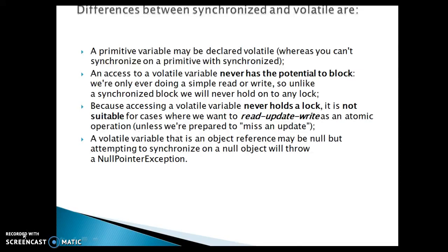When you declare a variable as volatile, there is no blocking mechanism and no lock involved. If you use a synchronized block, there is a blocking mechanism — threads that don't get the lock cannot access that critical section. Synchronized is related to locking, but volatile is not, because accessing a volatile variable never holds a lock. It is not suitable for cases where we want to read, update, and write as an atomic operation.